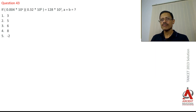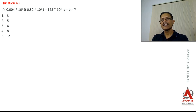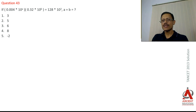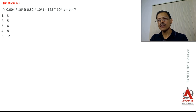Let us have a look at the question. If 0.004 × 10^a × 0.32 × 10^b is equal to 128 × 10^3, what is a + b? There are 5 answer choices.